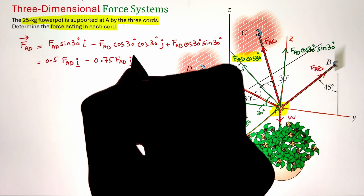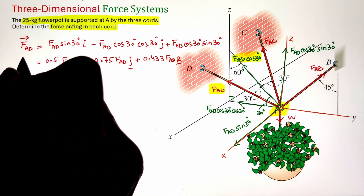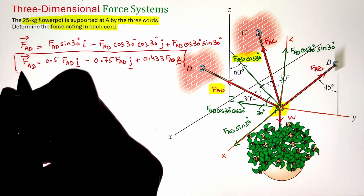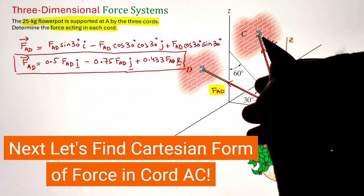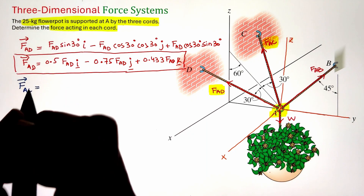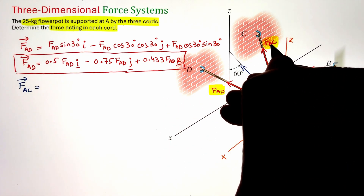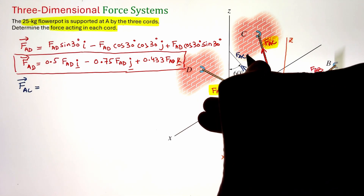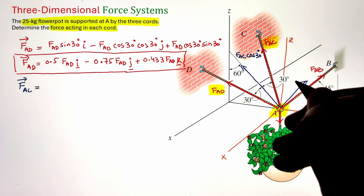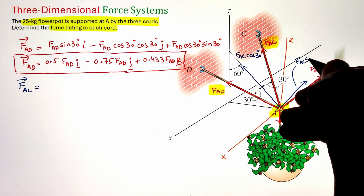Now let's repeat this process for F_AC. F_AD and F_AC are quite similar — the only difference is that the x-component of F_AC is in the negative direction. Redrawing the components of F_AC along x, y, and z axes: F_AC can be projected along a line on the z-y plane by taking cos 30, and the sine 30 function projects it along the negative x direction as F_AC sin 30.